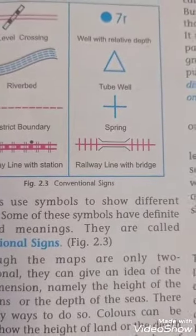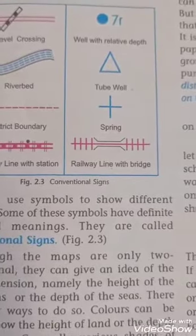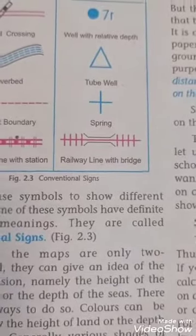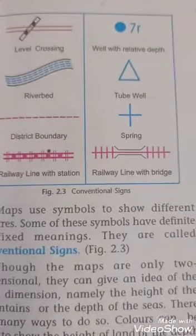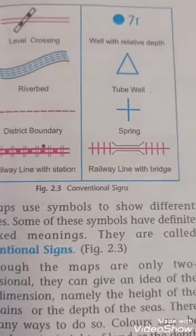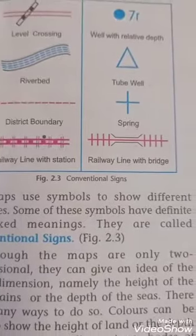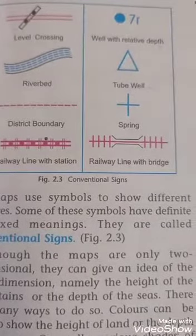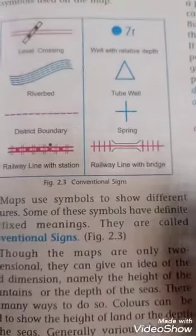How would you show features like town, bridges, post office, railway line, forest etc with the help of the key or symbols? You will have to show them by using certain colors, symbols or letters.